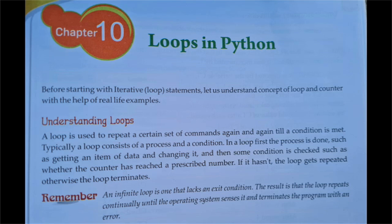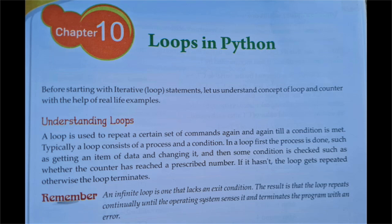In a loop, first the process is done — such as getting an item of data and changing it — and then some condition is checked, such as whether the counter has reached a prescribed number. If it hasn't, the loop gets repeated; otherwise the loop terminates. Loop mein jo certain set of commands hai wo repeat hote hain again and again jab tak condition true hoti hai; jaise condition false hoti hai to loop terminate ho jata hai.